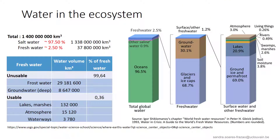Let's start with discussing the importance of water in the ecosystem. We have a lot of water in the ecosystem, but fresh water — the water that we will be able to use — only represents about 2.5% of the total amount. And if we look at fresh water, more than 99% of it is unusable, because this water is either frost water or stored too deep underground as groundwater. So finally, the water we can use only represents 0.36% of the quantity of fresh water available.